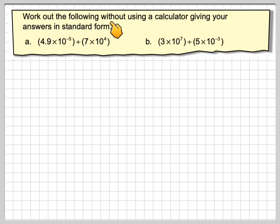Work out the following without using a calculator, giving your answers in standard form. We've got 4.9 times 10 to the minus 5 divided by 7 times 10 to the 4, and 3 times 10 to the 7 divided by 5 times 10 to the minus 3.